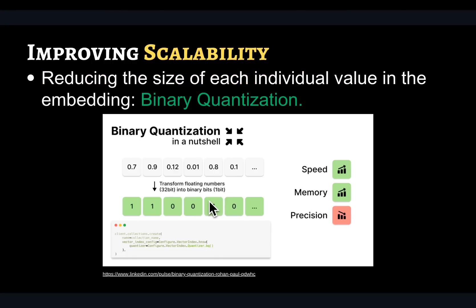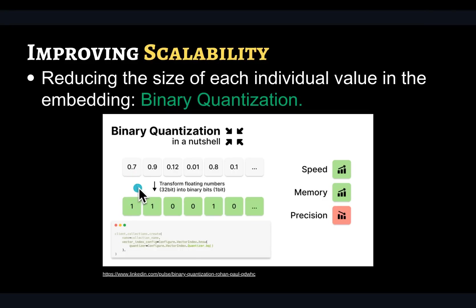That brings us to a new approach: instead of reducing the number of dimensions in the embedding vector, you actually change the precision you're using. An extreme example is that instead of using a four-byte, 32-bit representation for a single dimension, you just represent that dimension by a single bit. You can define a threshold — if it's above that threshold, you set the value to one; otherwise, you set it to zero. This gives you a substantial increase in speed of computation, reduced latency, and reduced memory requirements, but you will lose some precision.